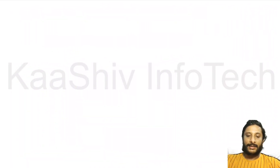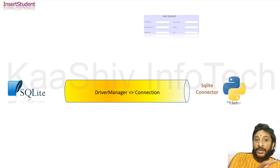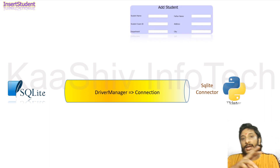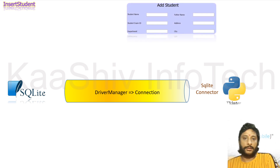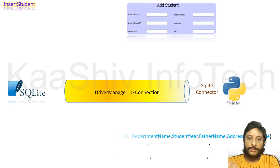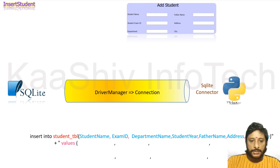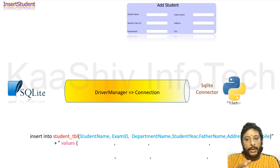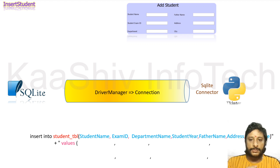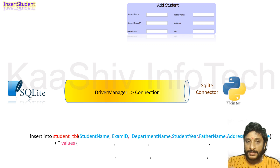Let's move on to the practical part — establishing a connection between SQLite and Python. I got the table created, I got the screen ready with Python. INSERT INTO table and column names, and you got the values. The values will be taken from the text boxes.